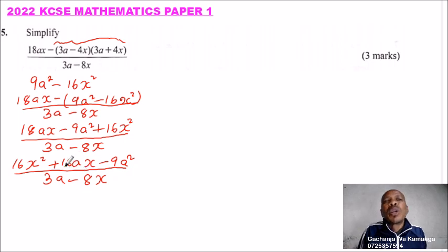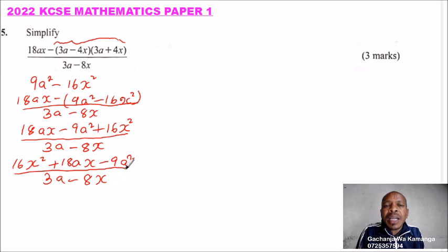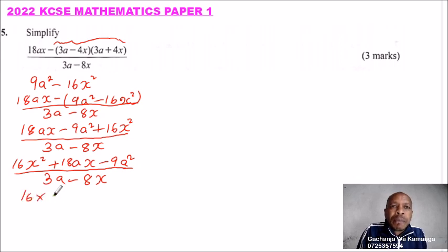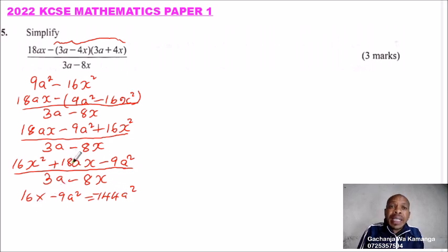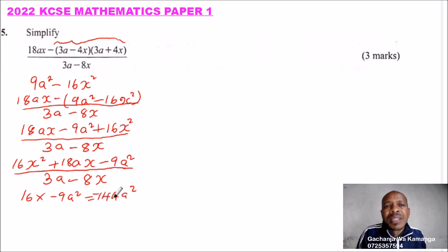Because we have two unknowns here, that is a and x, we treat one of them as a constant so that we have a quadratic equation. We treat a as a constant, so 9a squared is a constant. We multiply 16 by minus 9a squared, that gives us minus 144a squared. We need two numbers such that when you multiply you get minus 144a squared, and when you add you get 18a. You can factorize 144 to find those two numbers.